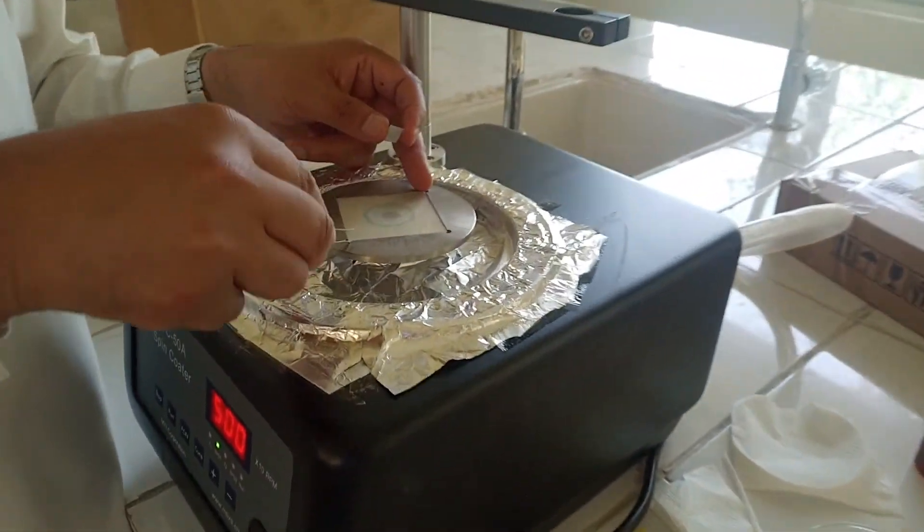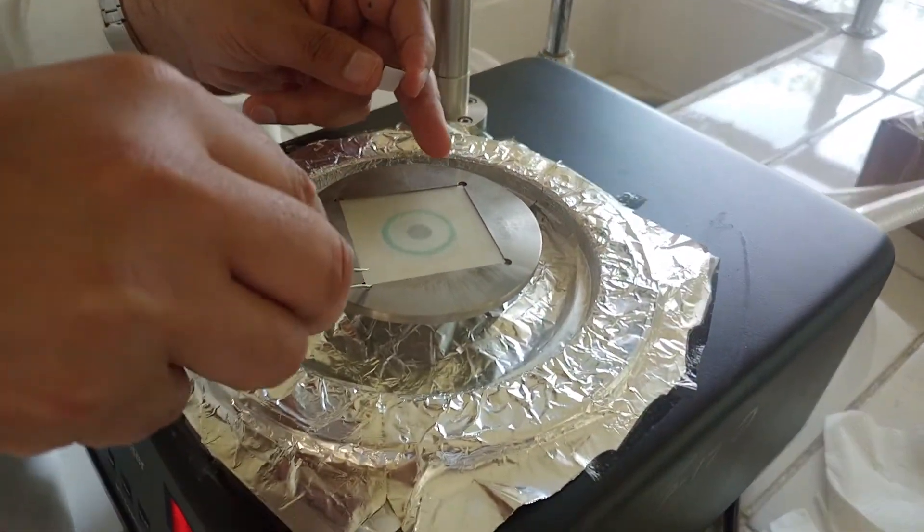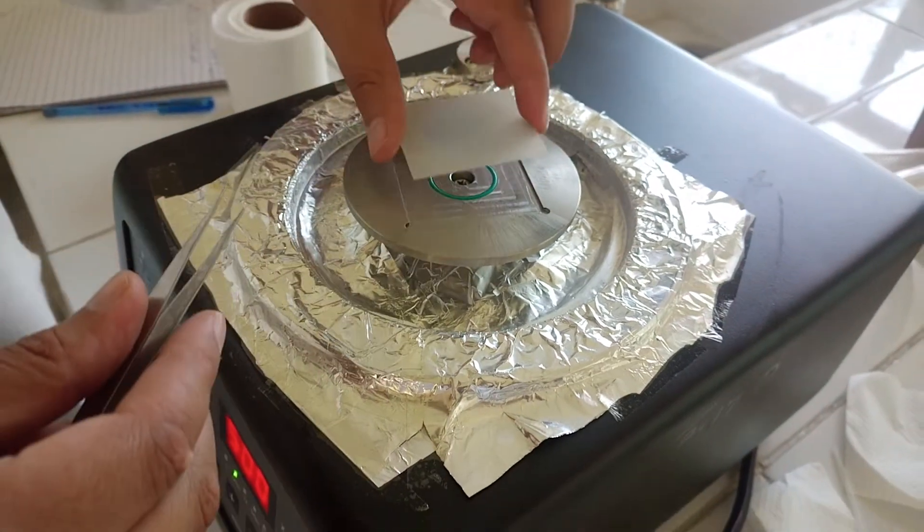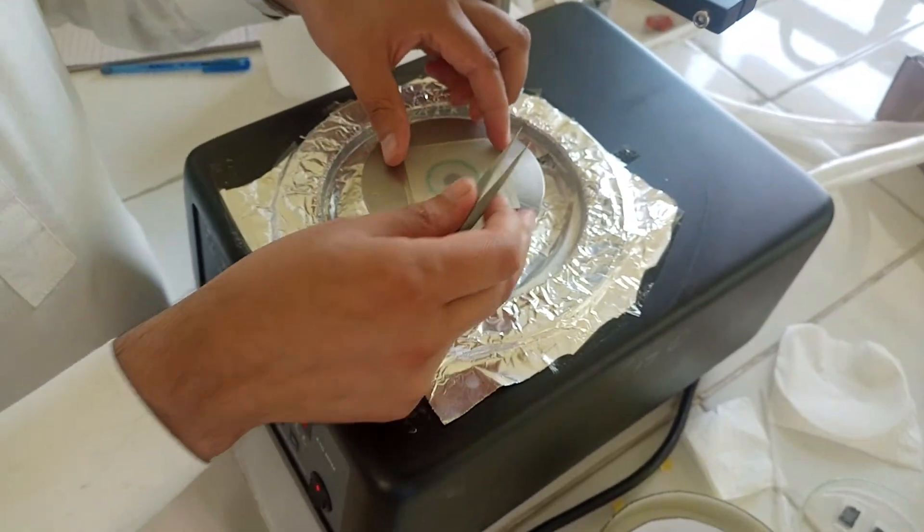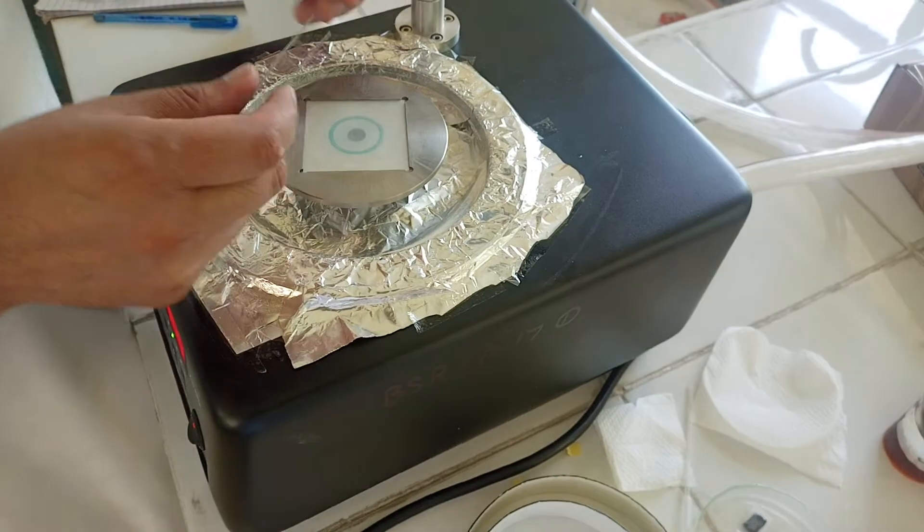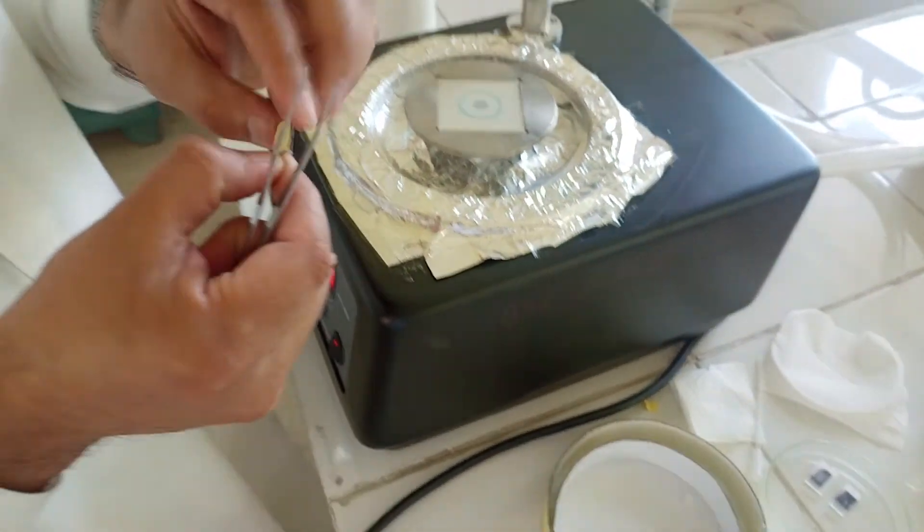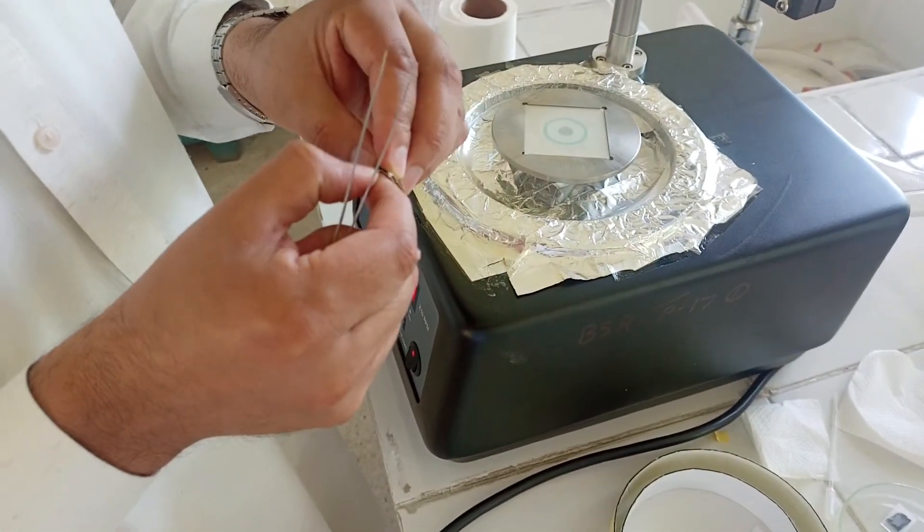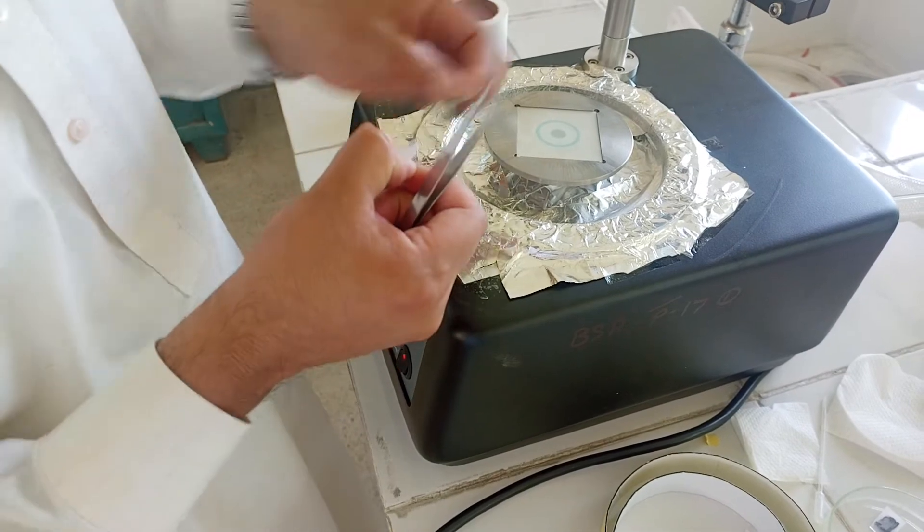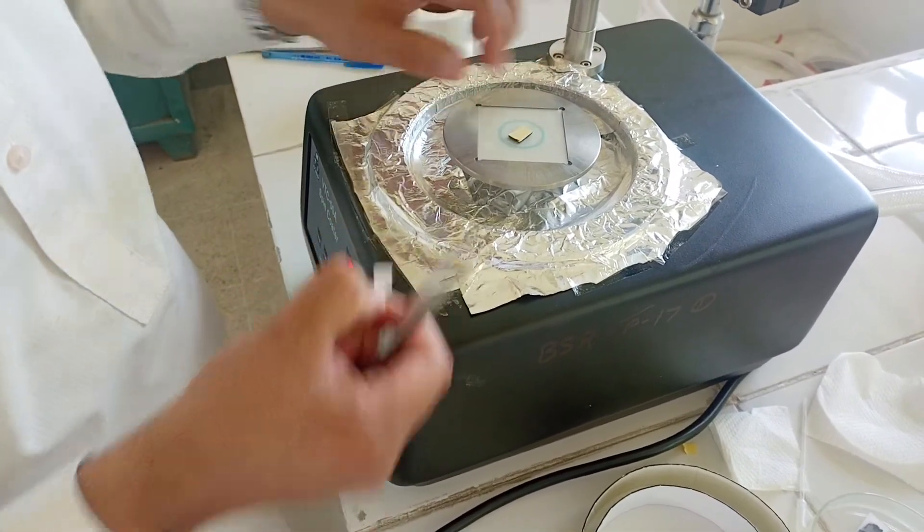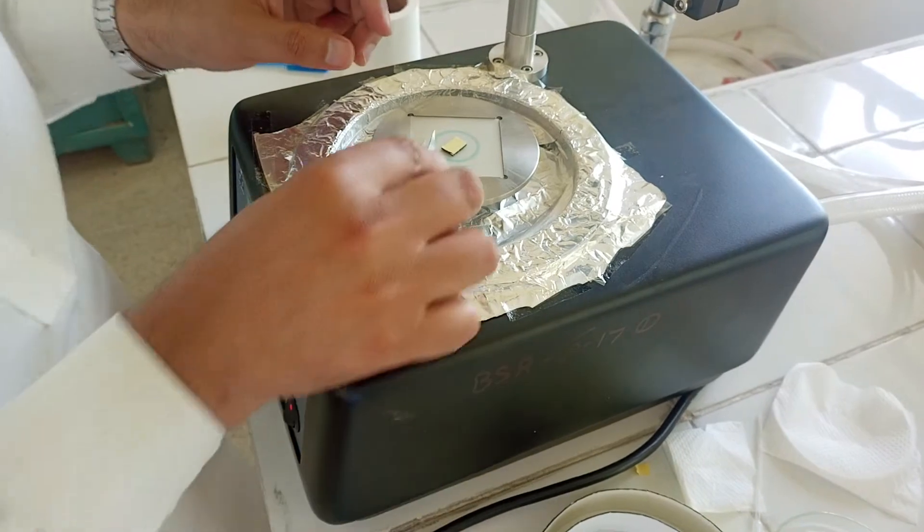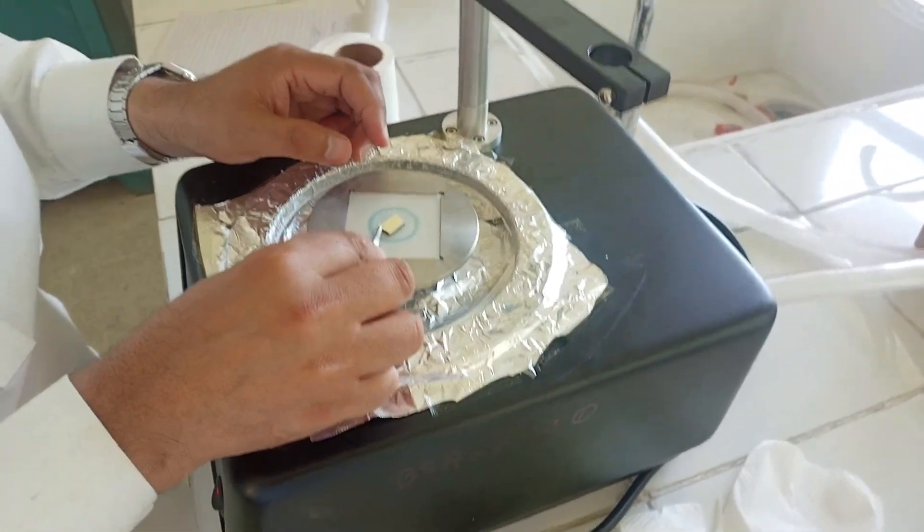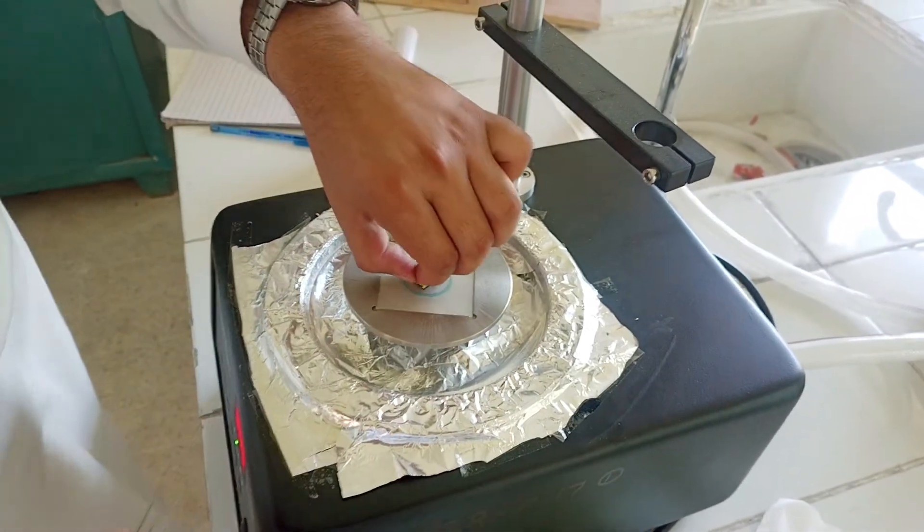Now we will take the chuck that we have placed here on the top, so we will place it here. Then we will use double tape and we will fix it here. Then we will remove the paper layer of this double tape.